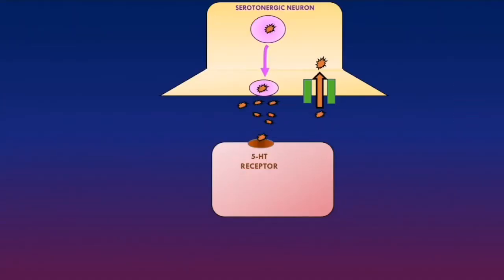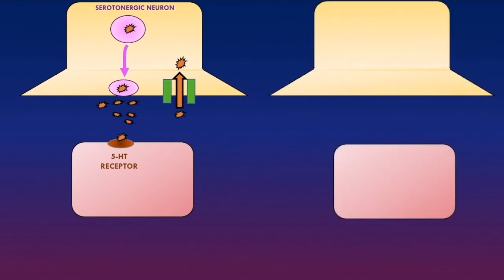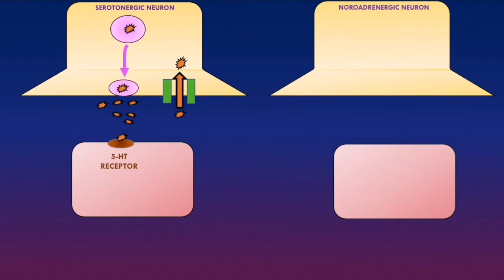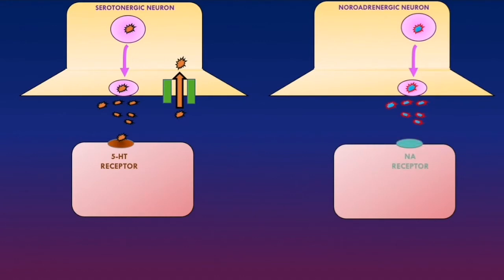There are also noradrenergic neurons in the CNS. This diagram shows a noradrenergic neuron with a presynaptic and postsynaptic neuron. These vesicles contain noradrenaline as a neurotransmitter. When an action potential arrives, the vesicles fuse with the presynaptic membrane and noradrenaline is released into the synaptic cleft. On the postsynaptic neuron there are noradrenaline receptors, and noradrenaline can bind to them to trigger an action potential. Transporters on the presynaptic neuron allow noradrenaline to be taken back up and packaged into vesicles.